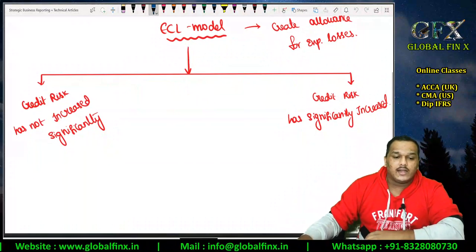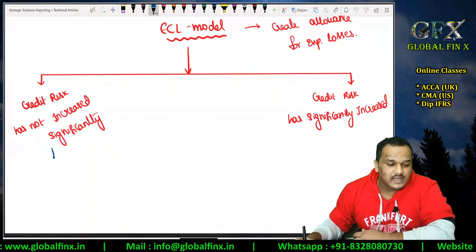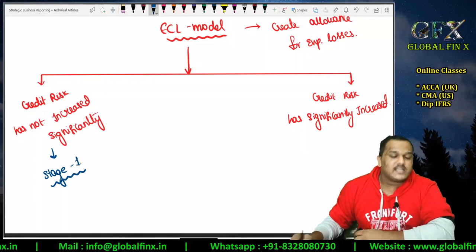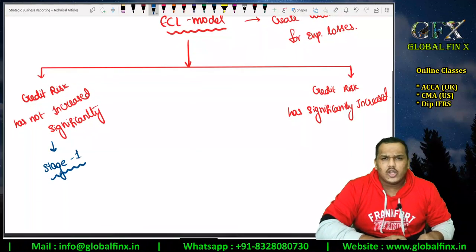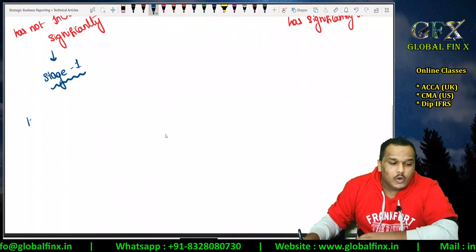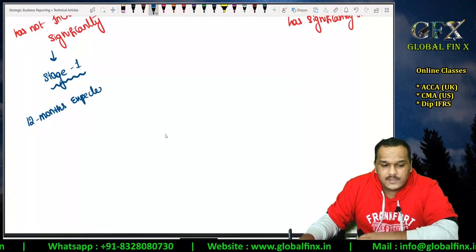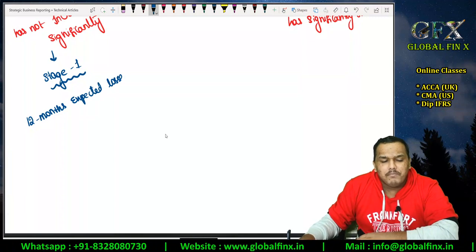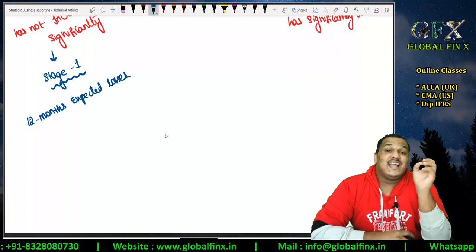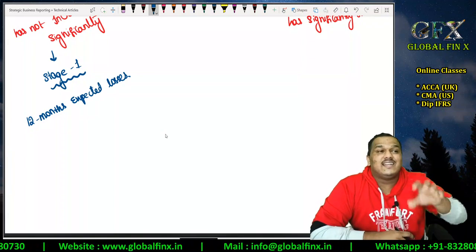Where the credit risk has not increased significantly, this is called Stage 1. When an instrument is in Stage 1, you have to create credit loss allowances — but you only create 12-month expected losses. Many students — 99% of students — assume that 12-month expected means whatever losses are expected in the next 12 months, for which they create an allowance. That is absolutely wrong.